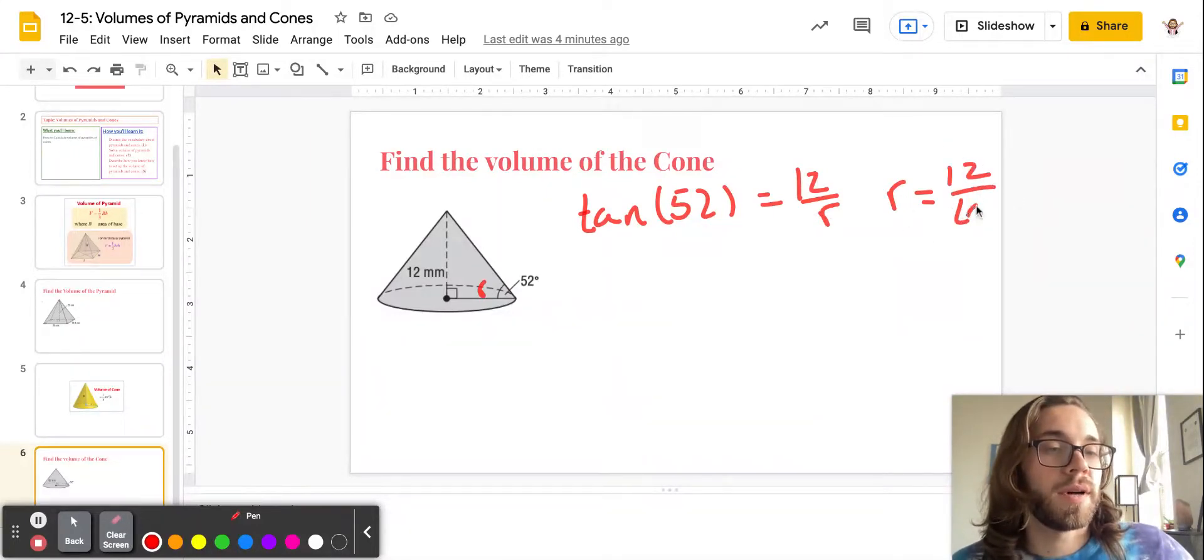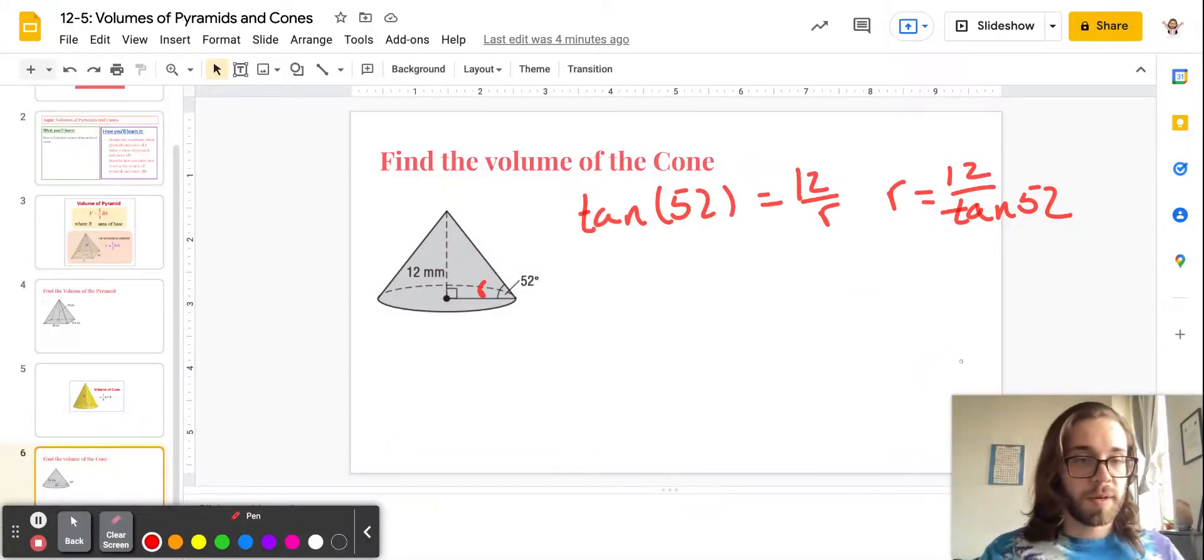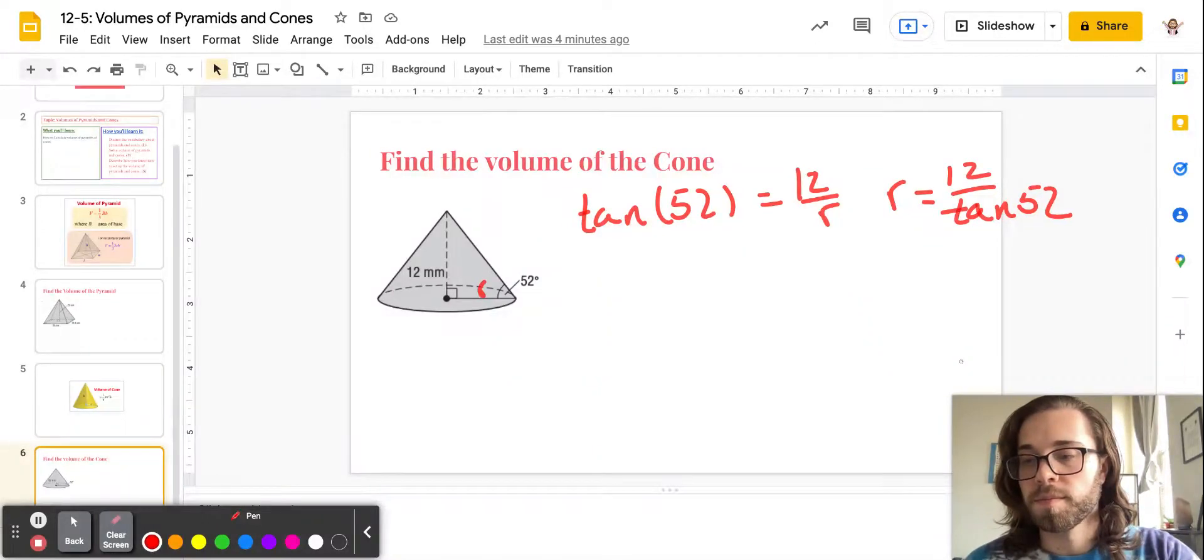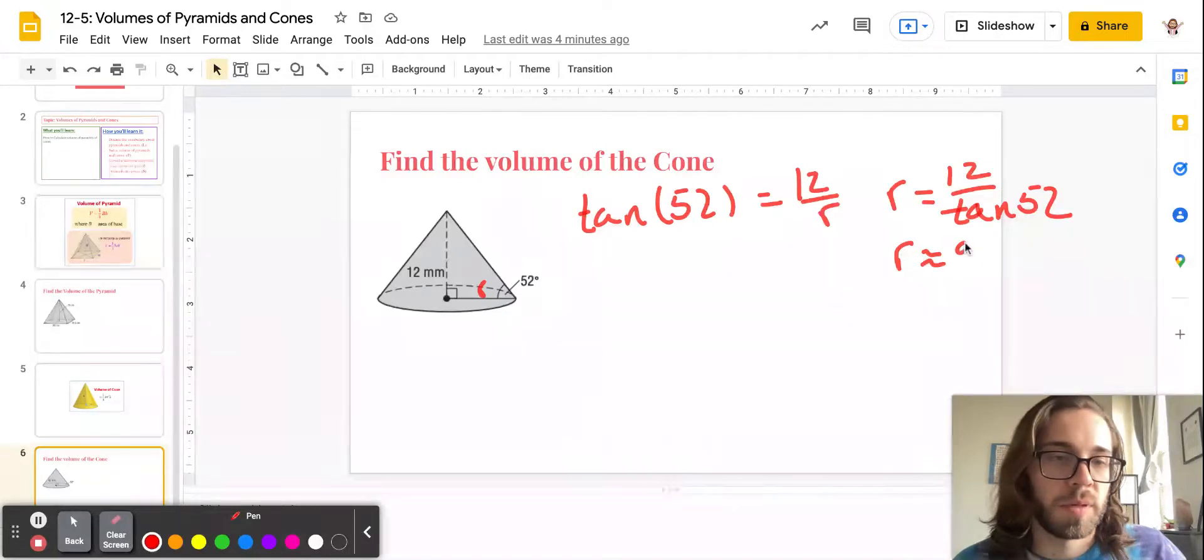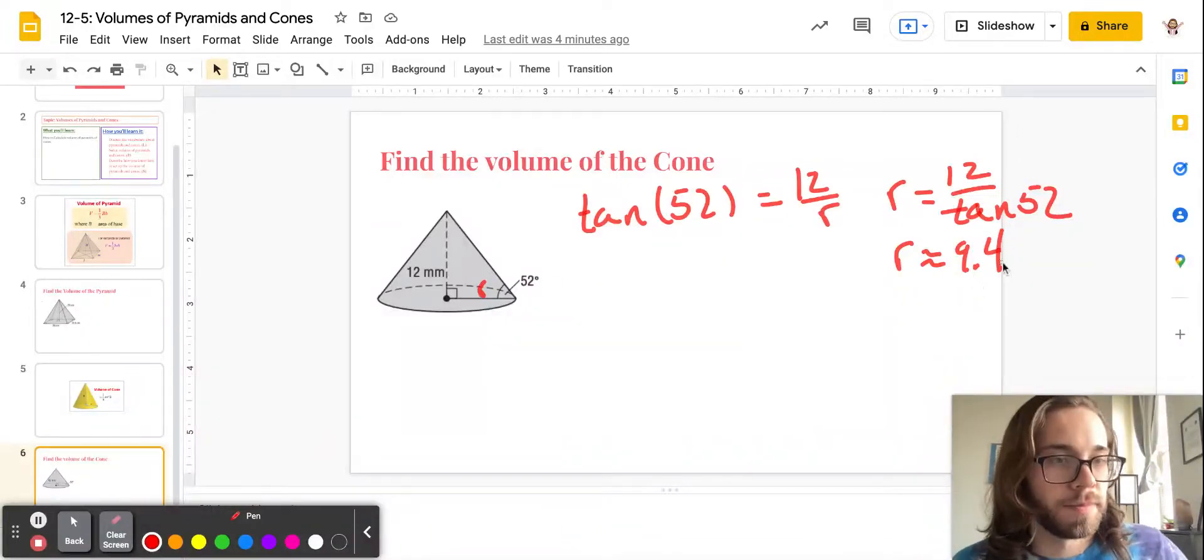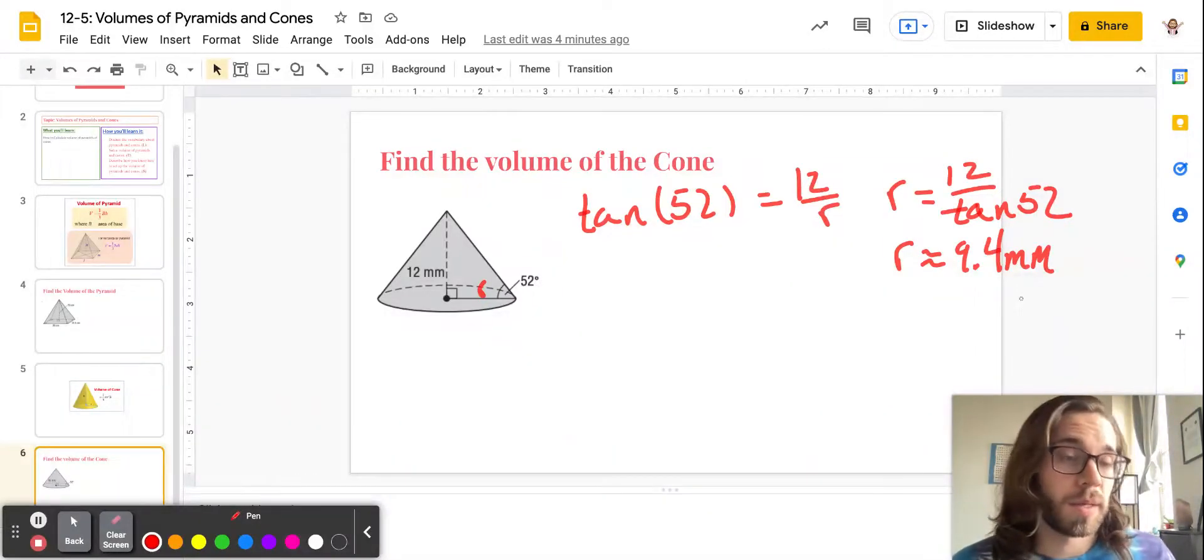So then you get 12 over tangent of 52. So now, see, this is a situation where you would be able to plug it in and figure it out from here. Okay. So that makes r about 9.4 millimeters.